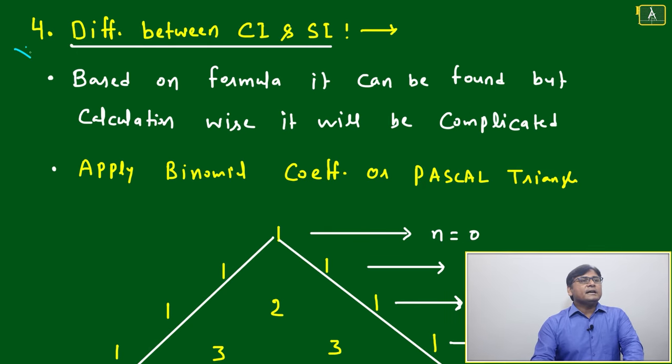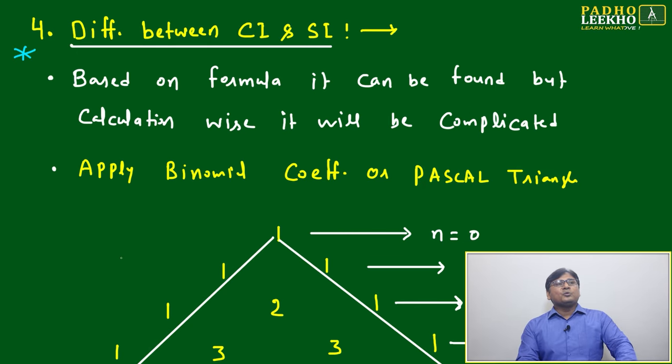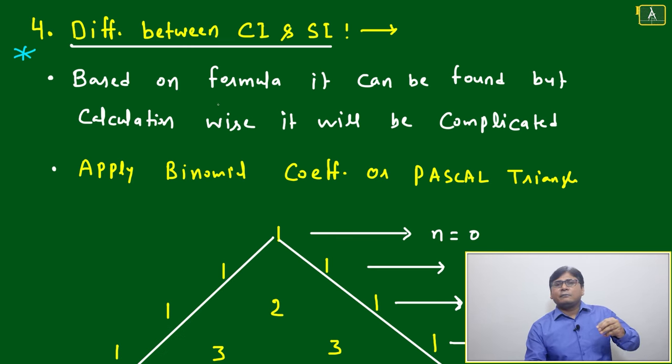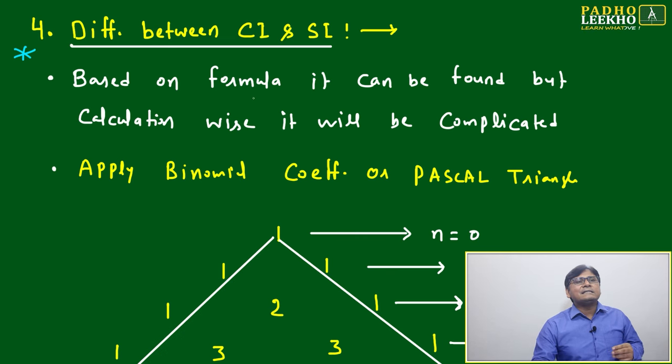Now we'll discuss one of the interesting and important areas: understanding the difference between CI and SI by calculation. Based on mathematical calculation, it's easy to say we can subtract - the amount of compound interest minus the amount of simple interest - to get the difference.